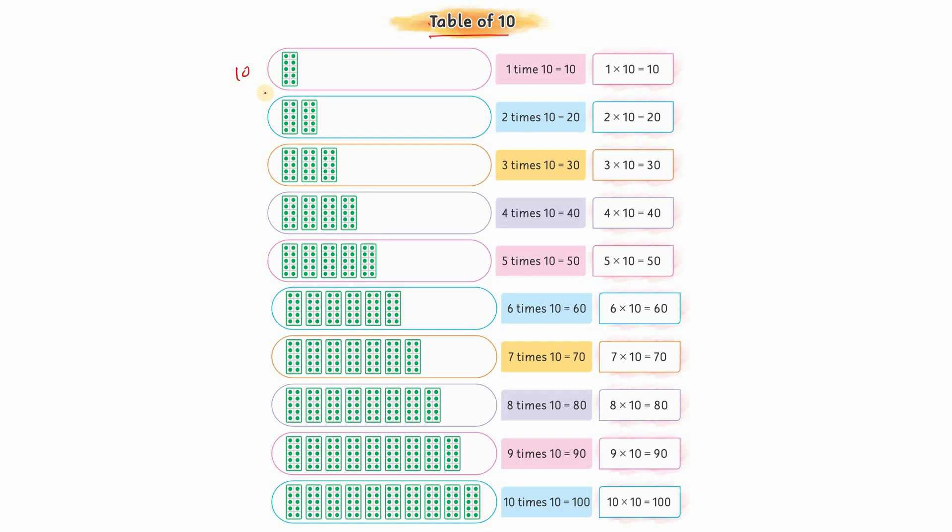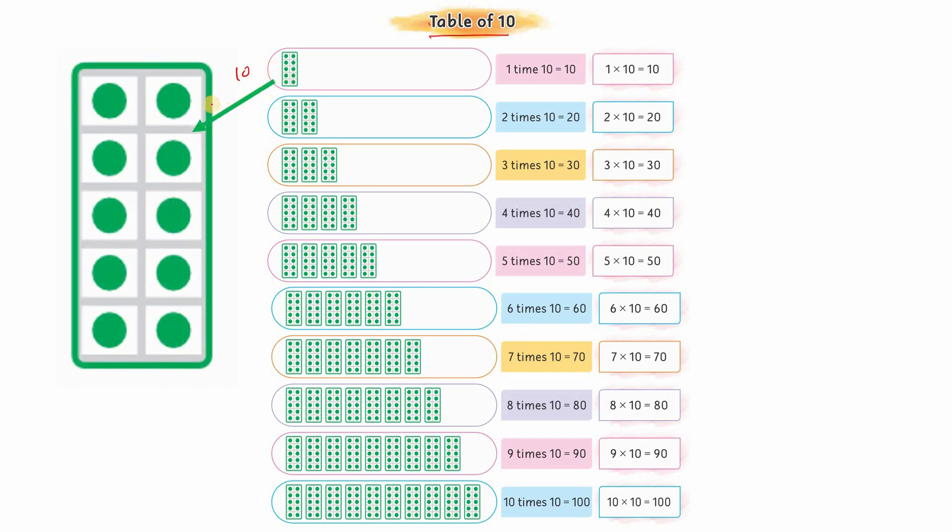Look, these are basically 10 objects. Earlier we had 2, 3, 4, 5, now we have 10 objects: 1, 2, 3, 4, 5, 6, 7, 8, 9, 10. The table of 10 is very easy. If you remember counting in tens...